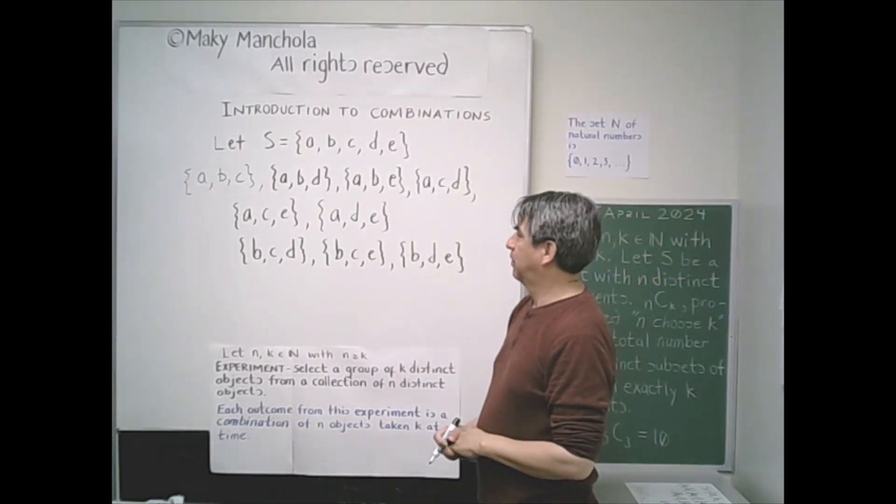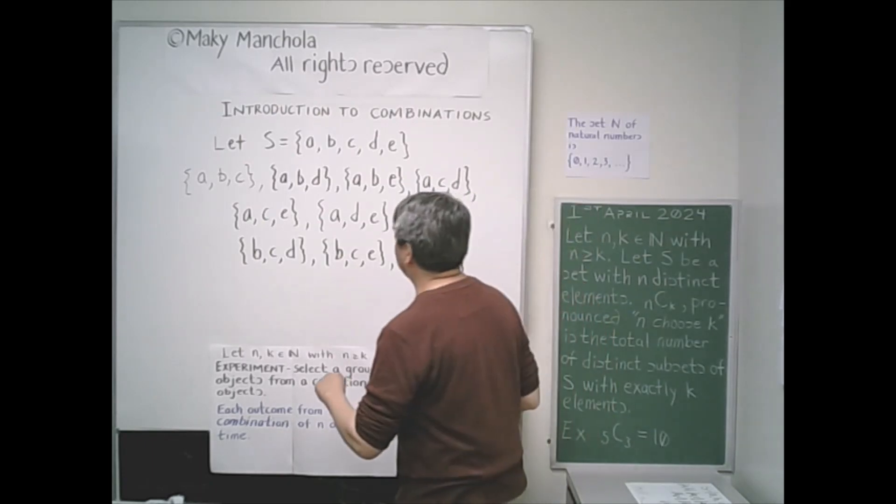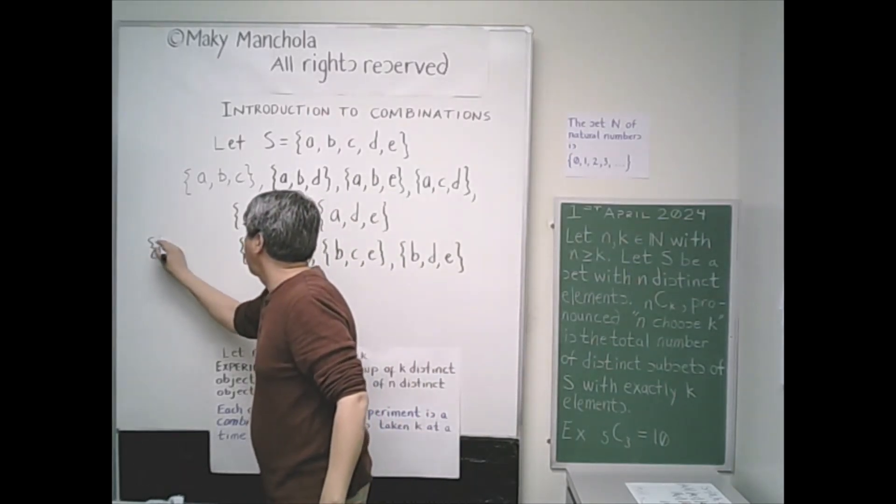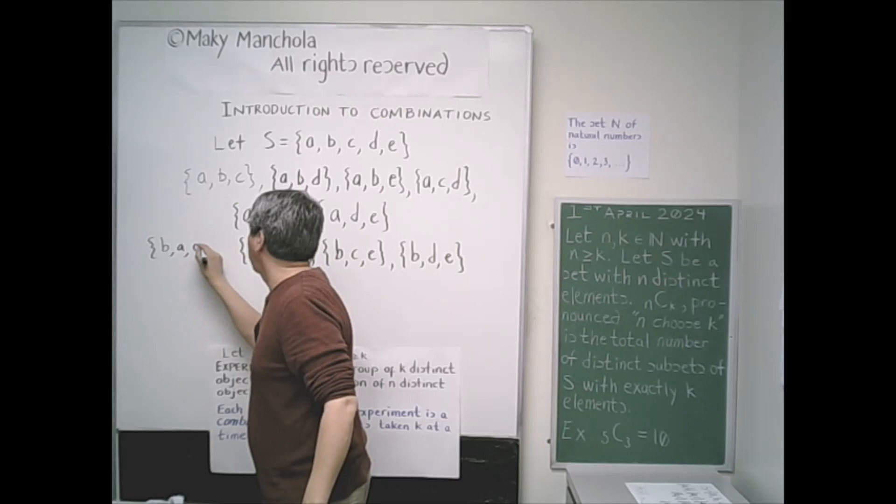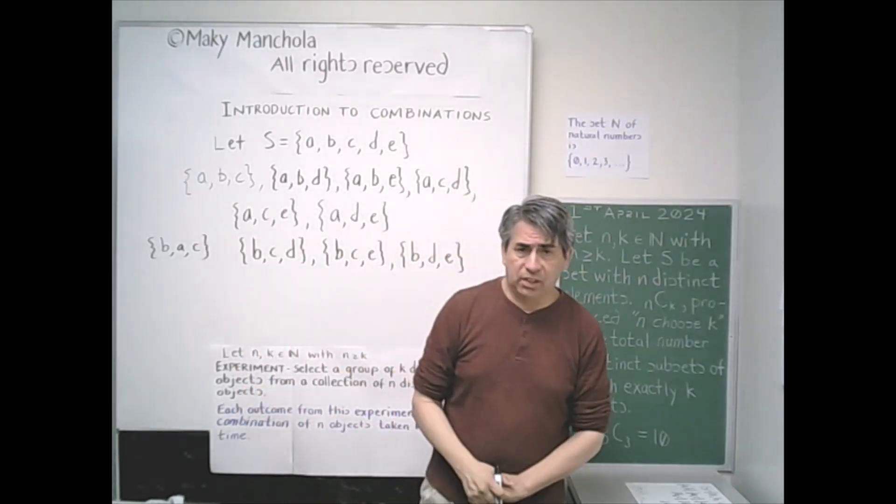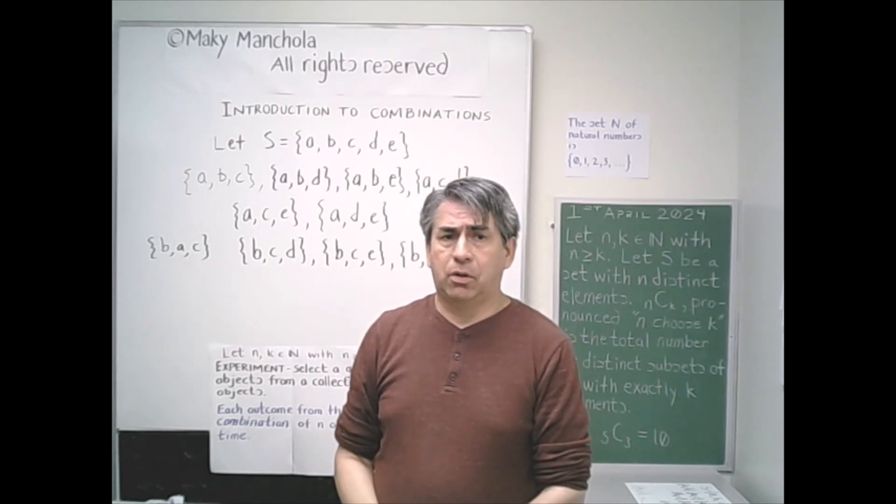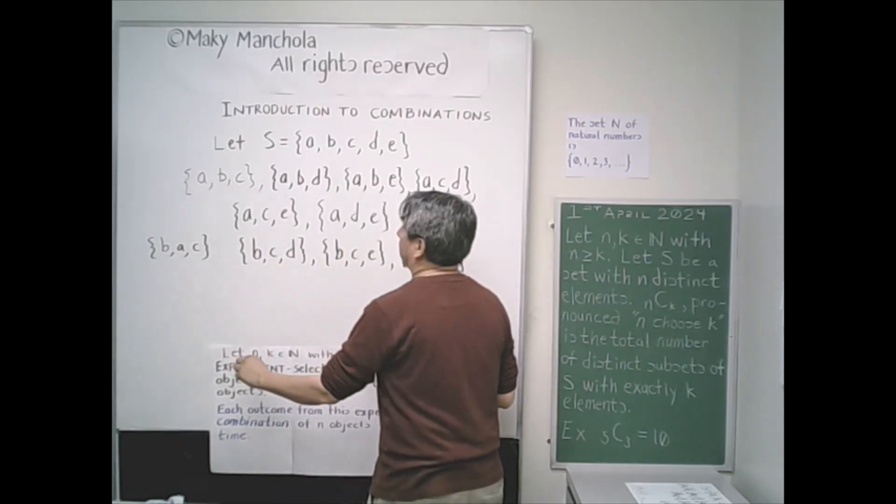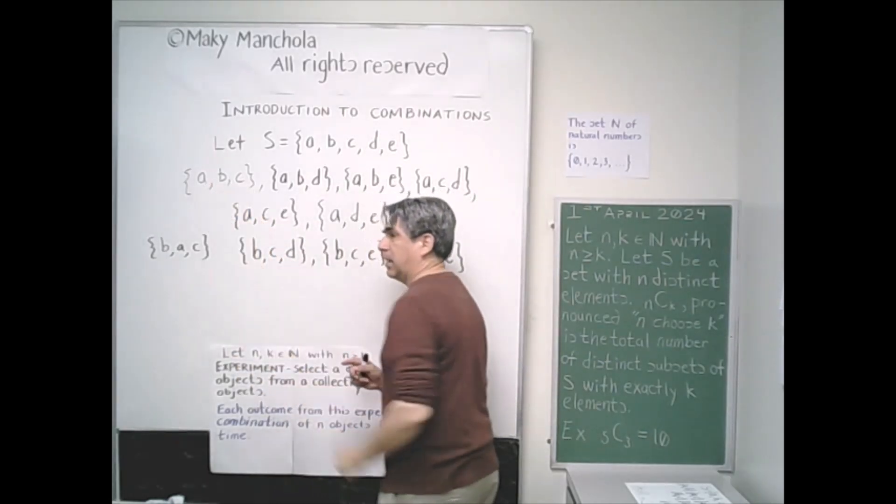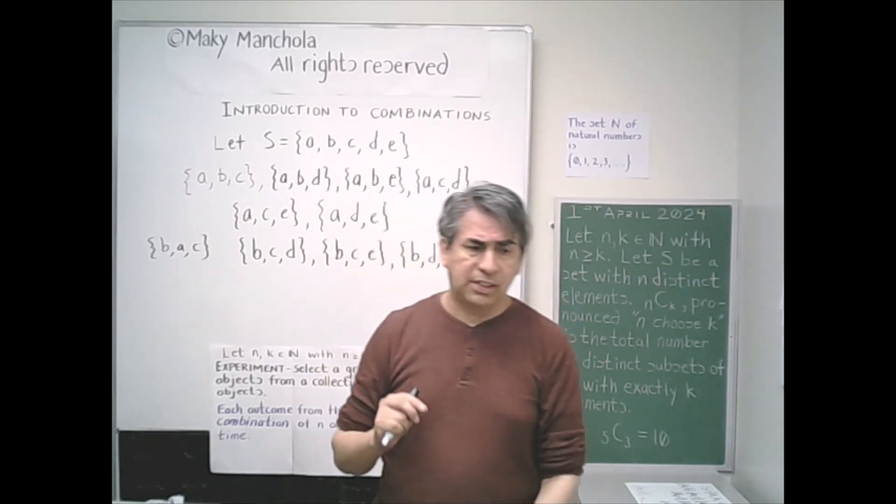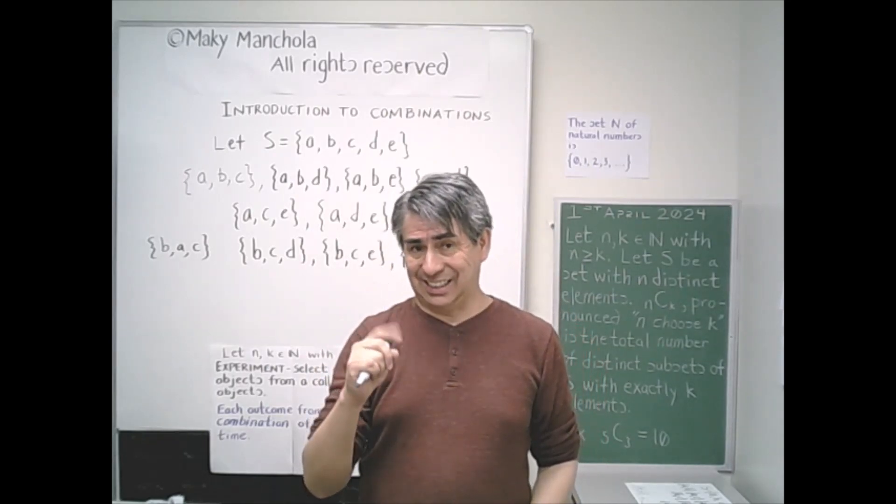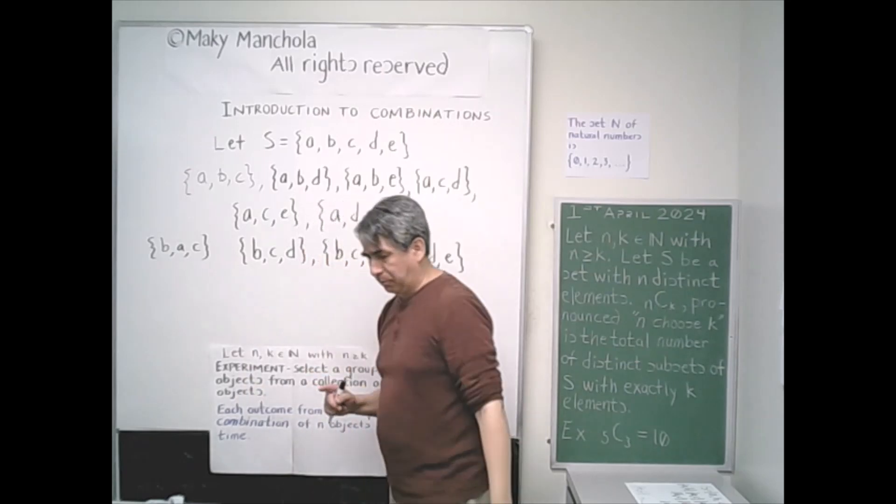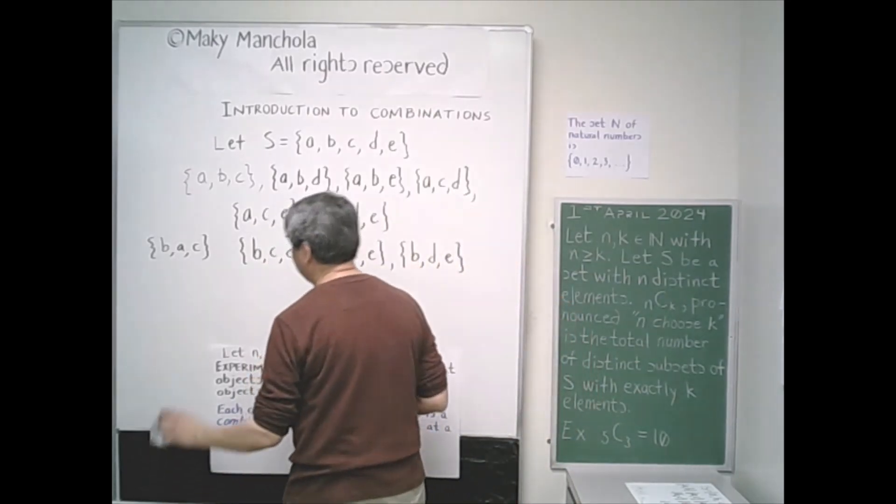If we are asked why didn't we list B, A, C, we didn't list it because that set BAC is the same as the set ABC. And as you can see, we have already listed that. Remember, we are listing all distinct three element subsets of S. These two subsets are not distinct.